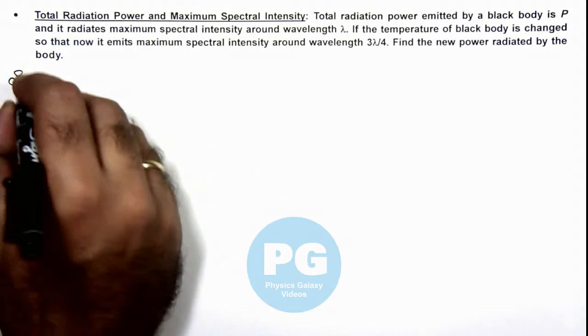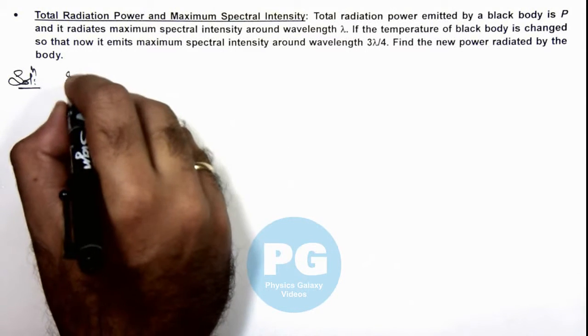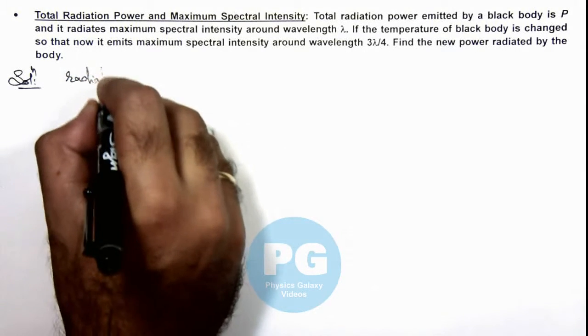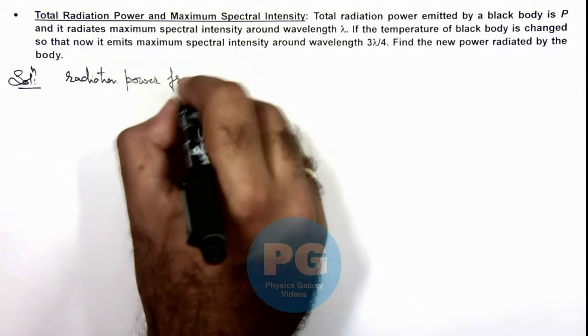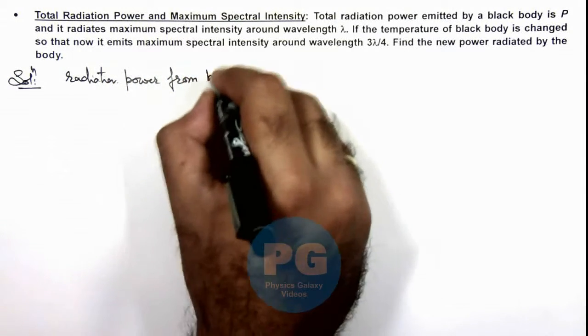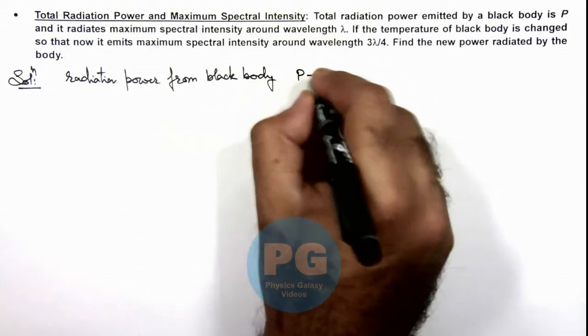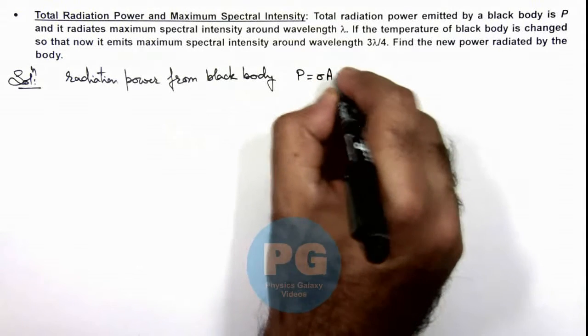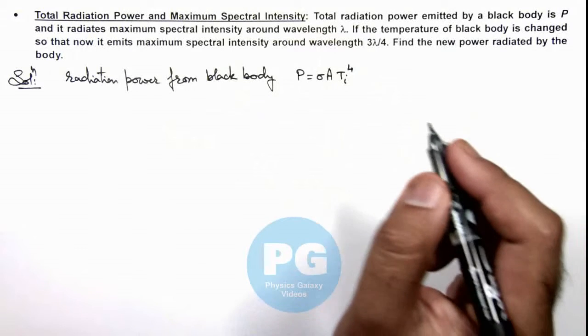Here, we can make use of Wien's laws. Radiation power from a black body can be directly given as P = σAT_i^4, where T_i is the initial temperature.